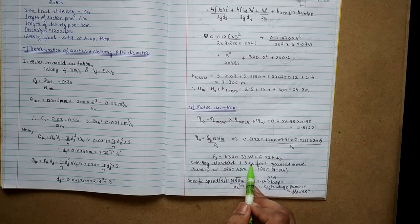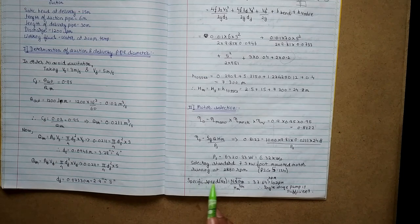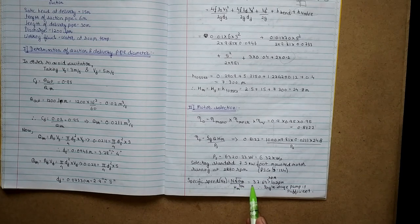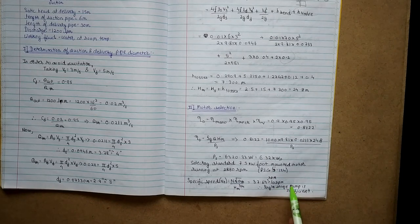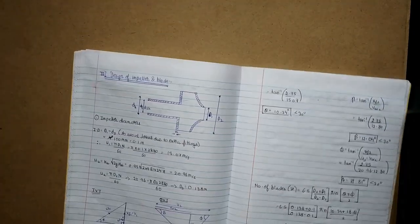From the standard table we select a 7.5 kilowatt foot-mounted motor running at 2880 rpm. Now we calculate the specific speed N_s using the formula N·√Q_th / H_m^(3/4), which comes out to be 37.64 rpm. Since this is greater than 10 rpm, this pump requires only a single stage.